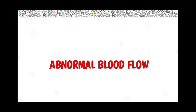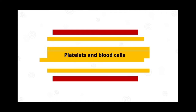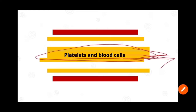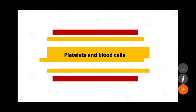The second abnormality is abnormal blood flow. Before discussing it in detail, here is the difference between turbulence and stasis. In a normal blood vessel, platelets and blood cells flow in the center at a faster pace, while plasma moves closer to the endothelium at a slower pace. This plasma layer separates the platelets from the endothelium.